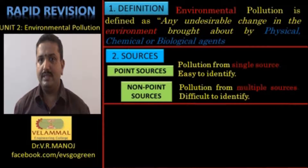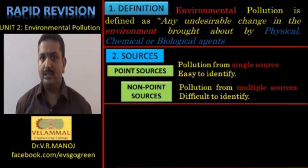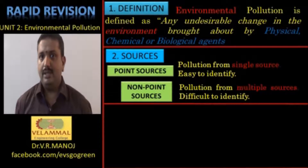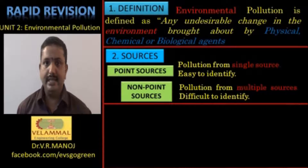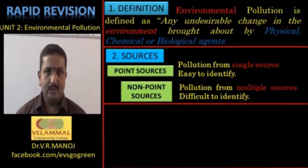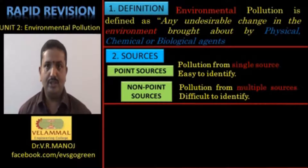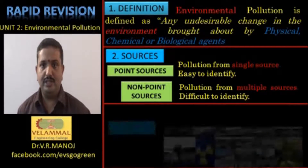Sources of pollution are majorly two types: point sources and non-point sources. Following the definition of the environmental pollution under question and the sources of pollution, you then have to move on to the types of pollution.